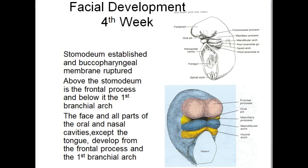In the fourth week, the stomodeum is well established and the buccopharyngeal membrane has ruptured. Above the stomodeum is the frontal process and below it is the first branchial arch. The face and all parts of the oral and nasal cavities, except the tongue, develop from the frontal process and the first branchial arch.